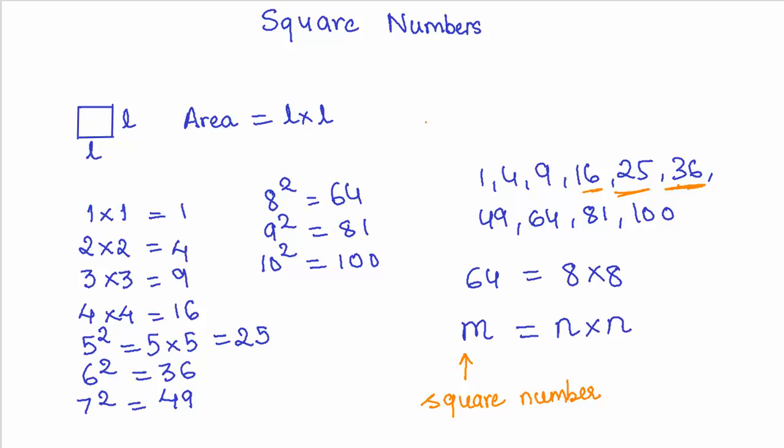The number of perfect squares from 1 to 100 - there are just 10 perfect squares from 1 to 100, as you can see here.